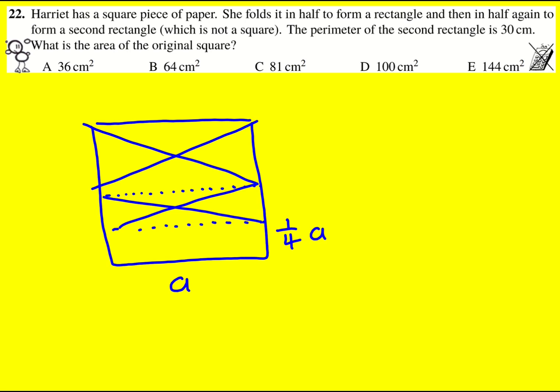Right, then we're told the perimeter of this second rectangle is 30 centimeters, so I can do A plus A which is 2A, and then a quarter A plus a quarter A is going to be a half A, and set that equal to 30.